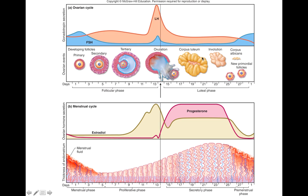The corpus luteum can be saved from degeneration by the presence of human chorionic gonadotropin, HCG. If HCG is being secreted by the fertilized egg, then HCG is going to save the corpus luteum from disintegration.